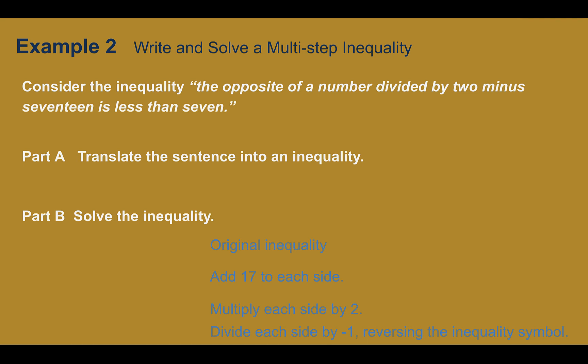Example 2. Write and solve a multi-step inequality. Consider the inequality. The opposite of a number divided by 2 minus 17 is less than 7. So translate that sentence into an inequality. Translating just means you're writing it into math. So we're going to pick out our words here. I'm going to start with I see is less than. I know that it's that simple. Is less than 7. So at the end, I already did that part. Is less than 7. It doesn't say less than or equal to, just less than.